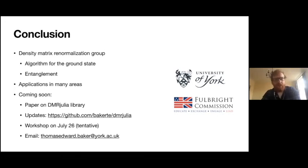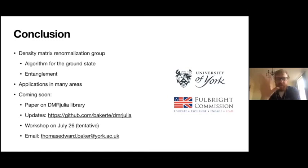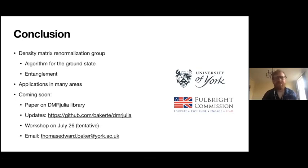We're coming to the end. The density matrix renormalization group is a very good algorithm for solving large second-quantized lattices for the ground state. It's also a very natural algorithm that encodes entanglement, making it very useful for searching for topological phases because entanglement can be characterized much more easily. The two applications I focused on here were quantum chemistry and DMFT. A paper containing all of these ideas in a longer format will appear on the archive by the end of this month. The code is available on the GitHub page. I'll also be having a workshop the week of July 26th for a hands-on tutorial. Thank you for your attention — I'd love to take any questions.